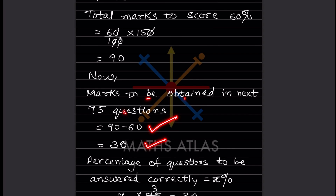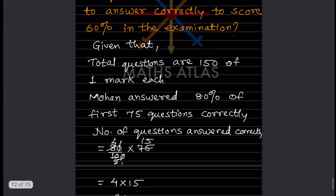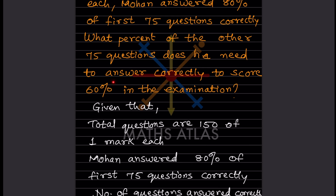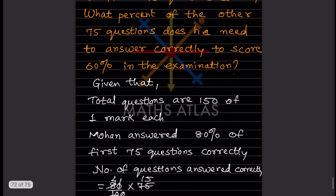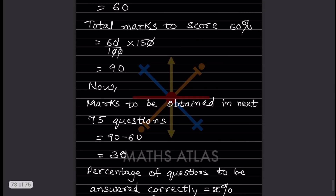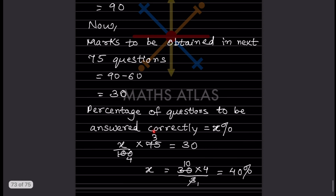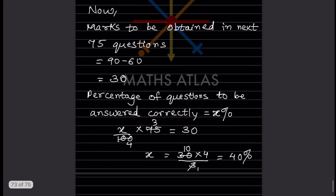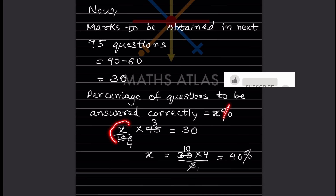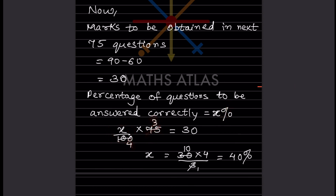Now we need to find what percentage of the other 75 questions he needs to answer correctly to score 60%. Let this percentage be x. So: x/100 × 75 = 30. Simplifying, 75/100 reduces — 3/4 — so we get: 3x/4 = 30.